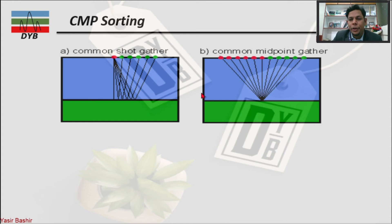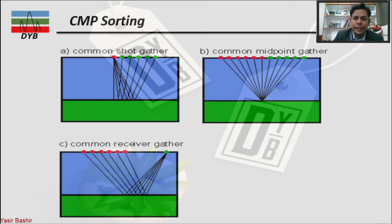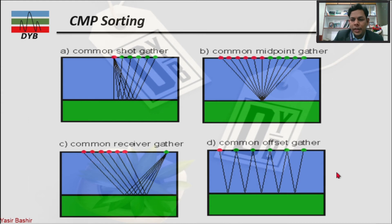The second one is the common midpoint gather. Each point has a common midpoint, which is the middle point between the source and receiver — normally for a flat reflector, but different for a dipping reflector. All the traces with respect to this midpoint, say CDP or CMP in the subsurface, form the common midpoint gather. The common receiver gather is similar to shot gather. All traces coming to one receiver from multiple shots form the common receiver gather. The common offset gather groups all traces recorded at the same offset — near, mid, or far offset.